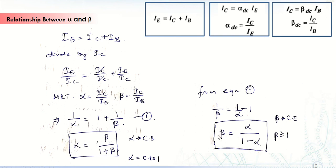The value of beta is always greater than 1. Looking at the expression alpha equals beta divided by 1 plus beta — since beta is greater than 1, the denominator is always greater than 1, so alpha will always be less than 1, meaning alpha is in the range 0 to 1. Similarly, since alpha is always less than 1, the denominator 1 minus alpha is a positive fraction, confirming beta is always greater than 1.